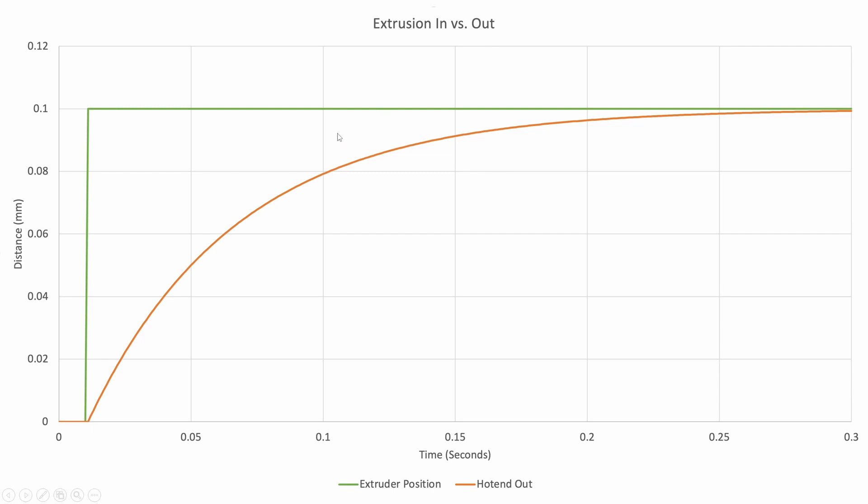The important thing again is that any area between these two lines in this case means that we are under-extruding for this entire period, so that is not desirable and we want to fix this—and this is what pressure advance does. But this is a really basic model, a basic step example where we're just doing a single extrude move.